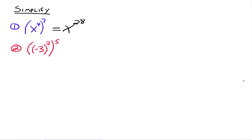Notice here that the base for the 2 is negative 3, while the base for the 5 is negative 3 squared. This exponential expression is being raised to an exponent, so we multiply the 2 and the 5 together. You keep the negative 3 in parentheses, and 2 times 5 gives you 10 — so you get negative 3 to the tenth.